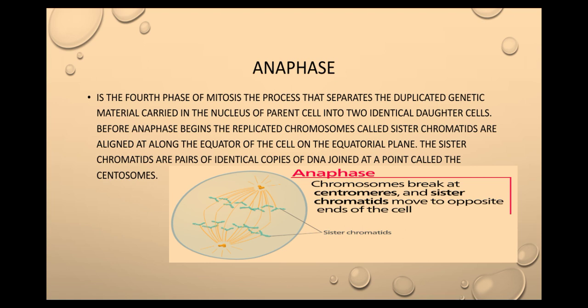The next phase is the fourth phase of mitosis, anaphase. The sister chromatids are pairs of identical copies of DNA joined at a point called the centromere.